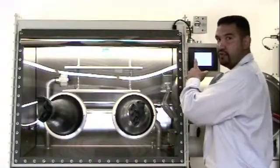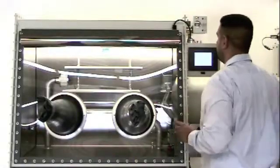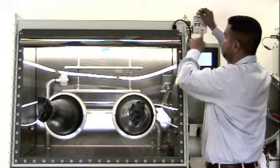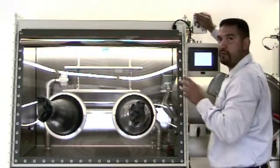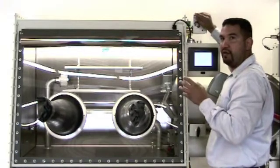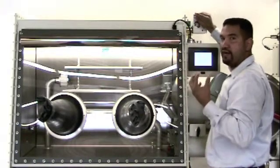Once the oxygen readings have stabilized, adjust your span potentiometer to 20.9%, which is the amount of oxygen in the air that we breathe.